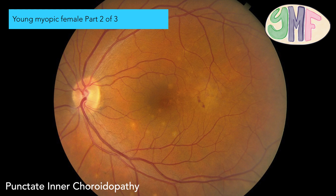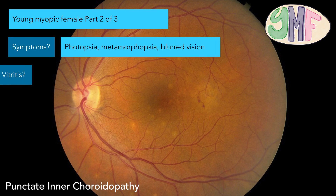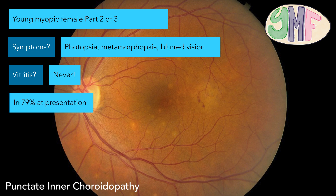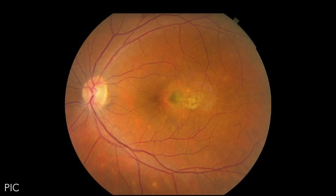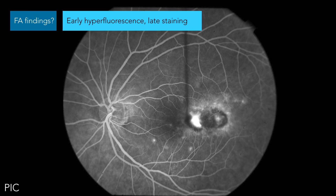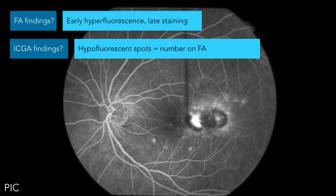I don't know why we said young myopic female on the MCP because 45-year-olds can be young too. Symptoms: photopsia, metamorphopsia, blurred vision — didn't have the enlarged blind spot. And then vitritis, yes or no? No, never — until they cross over and become MCP or something. CMV, yes or no? Yes — this is the main CNV one, 79% at presentation. So if somebody asked you which white dot syndrome is most likely to be associated with CNV at presentation, always PIC. FA findings: this is not an early-block, stain-late — this is an early hyper, late stainer. So this is an exception to that rule. ICG findings: hypofluorescent spots equal the same number as on FA.